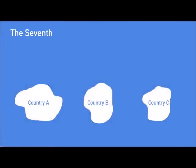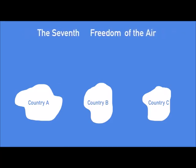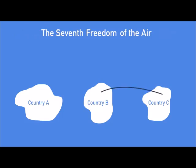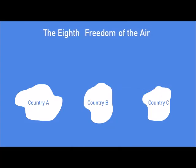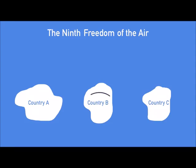Grouping the seventh, eighth, and ninth freedoms together — they're quite similar and often come together. The seventh freedom allows an airline to fly between two foreign nations without connecting on to its home. The eighth freedom is the right for an airline to fly between two cities in one foreign country while continuing on to its own country. And the ninth freedom is the right for a foreign airline to fly between two points in a foreign country without continuing on to its own country.